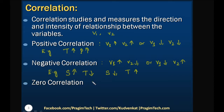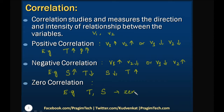In the case of zero correlation, from the word itself we can understand that there is no correlation — no relationship or association between the variables. For example, there is no correlation between temperature and speed of a car, so we can say that it is a zero correlation.